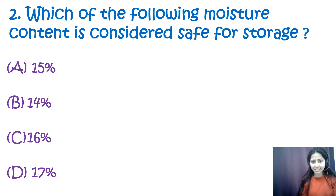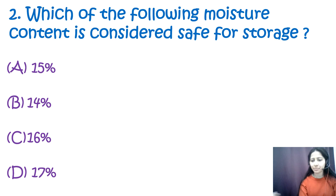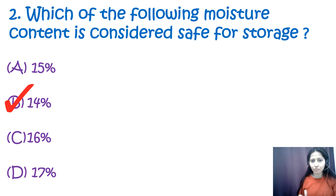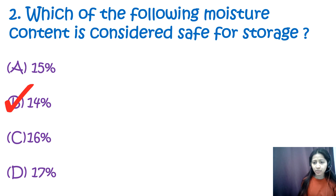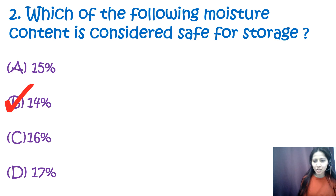Question 2: Which moisture content is considered safe for grain storage? Options are 15%, 14%, 16%, and 17%. The correct option is B — 14%. Safe moisture content depends on grain type and storage duration, but the general rule is to dry grains to 14% or less to avoid mold, discoloration, respiration losses, or insect damage.